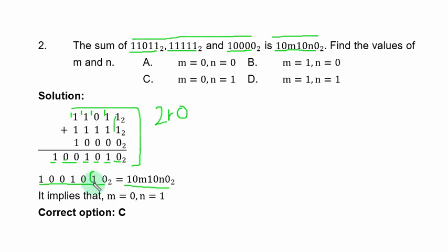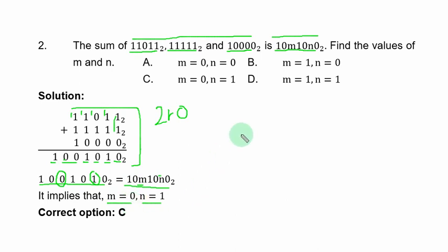Comparing the result with the given expression: n is in the position corresponding to 1, so n = 1; the position of m corresponds to 0, so m = 0. Therefore m = 0 and n = 1. The correct option is C.